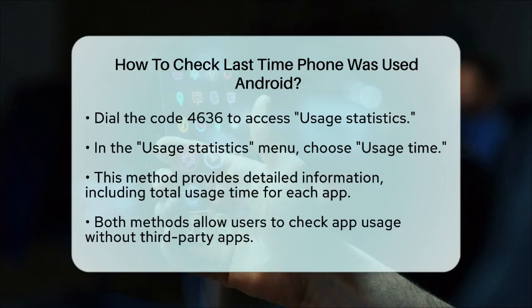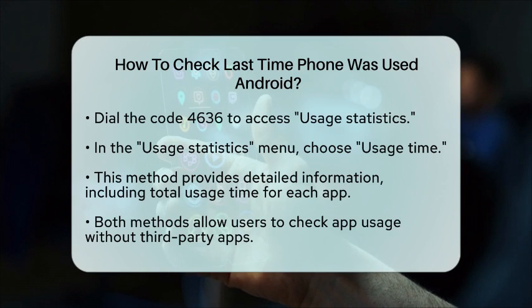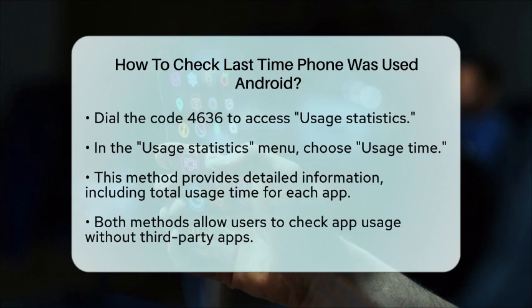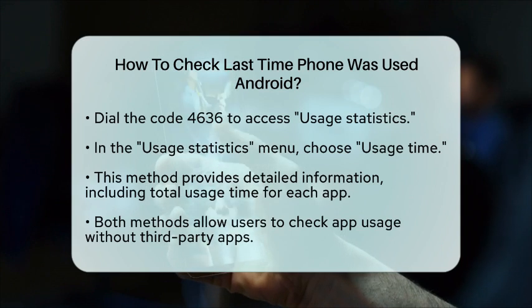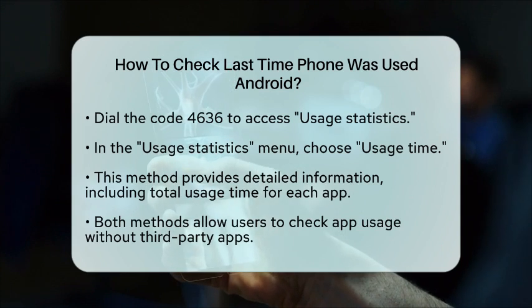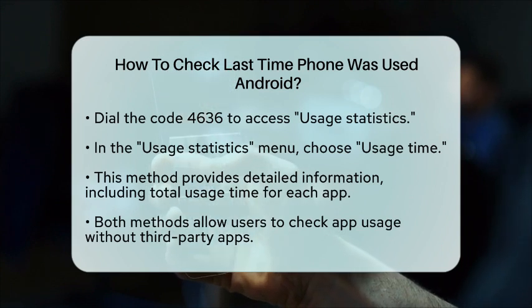So whether you use the Play Store method or the dialer code method, you'll be able to check when you last used any app on your Android phone easily and without needing any third-party apps.